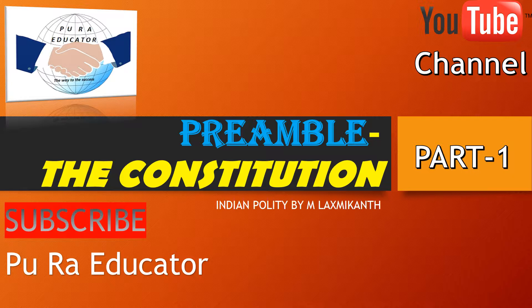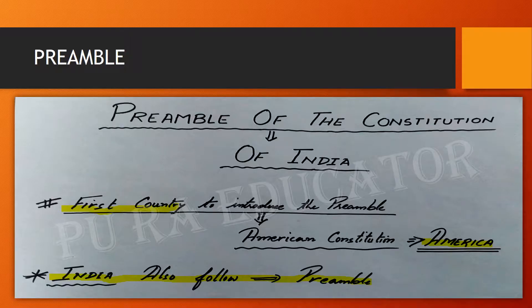Friends, I have divided the chapter into two parts. In this chapter, I will be dealing with the Preamble — what the Preamble is about and the actual content of the Preamble. So friends, let's start the chapter in detail. Here the question is: who was the first country to introduce the Preamble in their constitution? America was the first country to introduce a Preamble in their constitution, after which many countries followed this pattern, and India was among one of them. Now we will see the Preamble of India in detail.